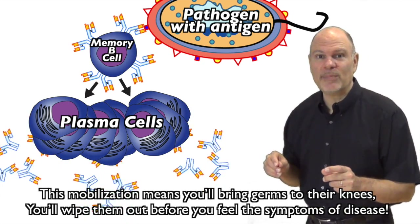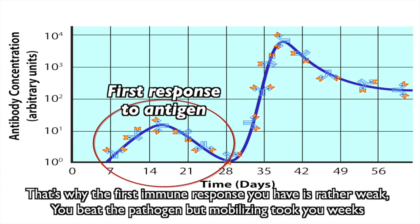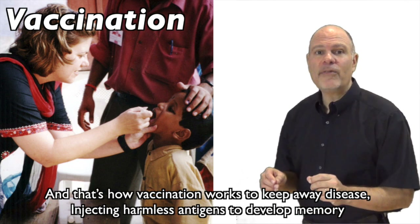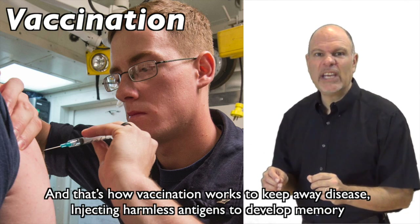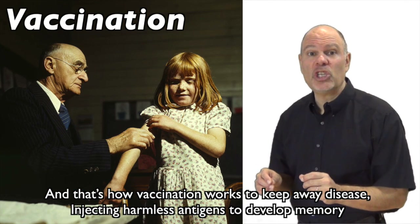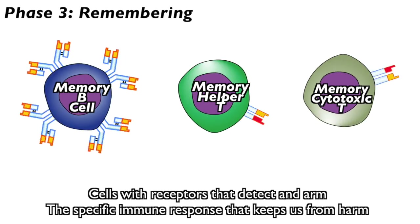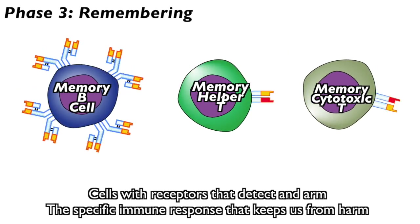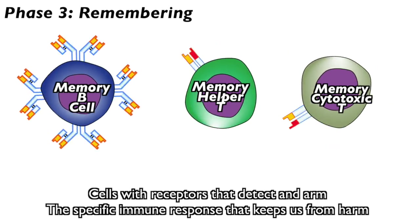This mobilization means you'll bring germs to their knees — wipe them out before you even feel the symptoms of disease. That's why the first immune response you have is rather weak: you beat the pathogen but mobilizing took you weeks. But the second response can be fine — many more antibodies made in much less time. And that's how vaccination works to keep away disease: injecting harmless antigens to develop memory cells with receptors that detect the specific immune response that keeps us from harm.